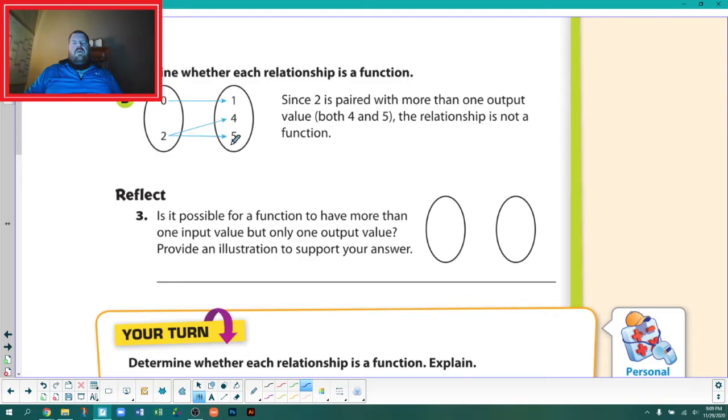Looking at this example, since each input value is paired with only one output value, the relationship is a function. So since there's only one line coming out of each one of these on the left, then it's a function. In this second one, we have zero and two and then one, four, and five in the output. On the input, zero goes to one, but two goes to four and five. Since there's two lines coming out of the two, that can't work out.